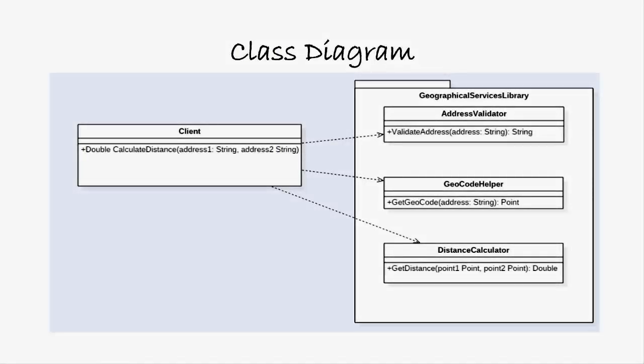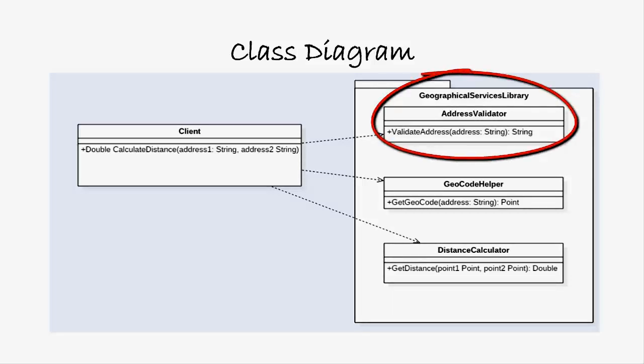Here is a software design example. In this class diagram on the right hand side we have a class library called the Geographical Services Library, which includes three classes: AddressValidator, GeocodeHelper, and DistanceCalculator. AddressValidator has a method called validate address that accepts an address as a string object.